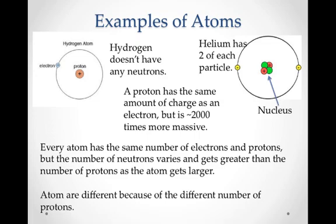Here are some examples of atoms. This is the hydrogen atom with one proton and one electron. Hydrogen doesn't have any neutrons. This is helium that we just saw a second ago. Helium has two of each particle, two protons, two neutrons, and two electrons. And the protons and neutrons are in the nucleus. A proton has the same amount of charge as the electron, but it is 2,000 times more massive.